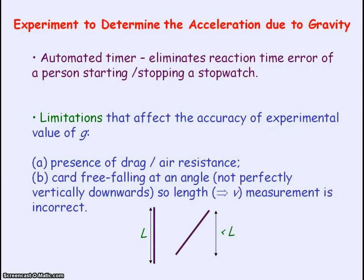Also, if the card is free falling at an angle — so it is not falling perfectly vertically downwards — then the effective length measurement of the card passing through the light gate will be incorrect. A larger value of length and a smaller time measurement will be recorded, so the calculated velocity v will be larger, giving a larger value for the acceleration of free fall.